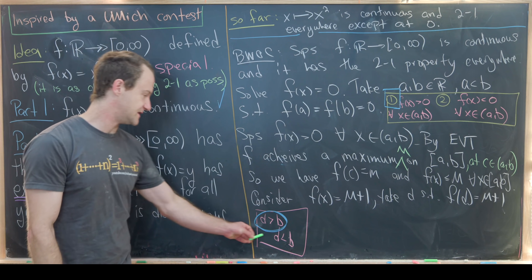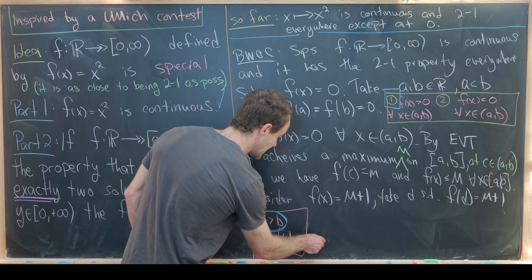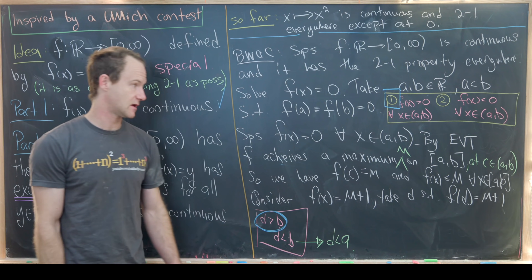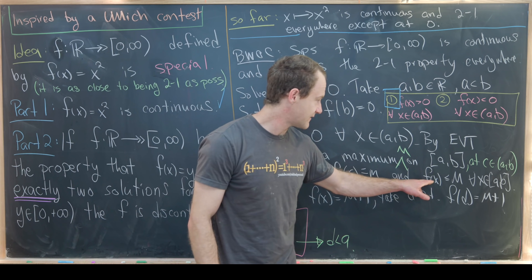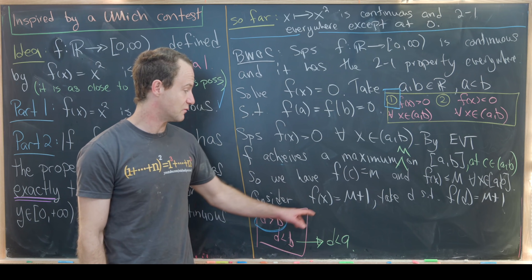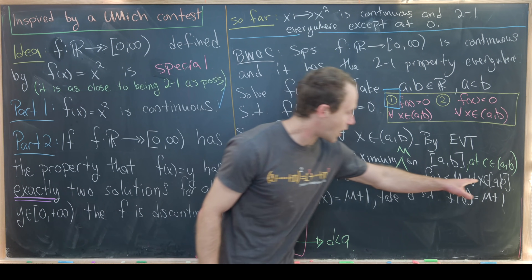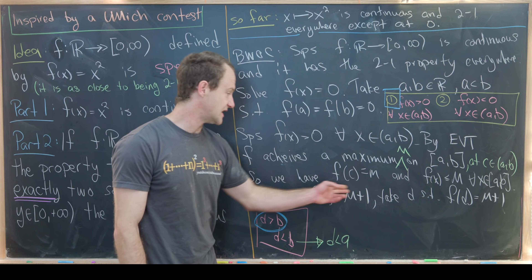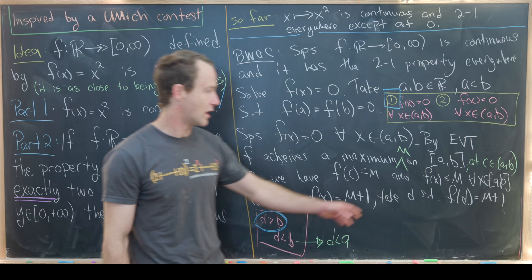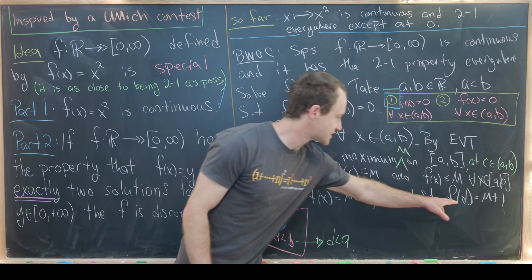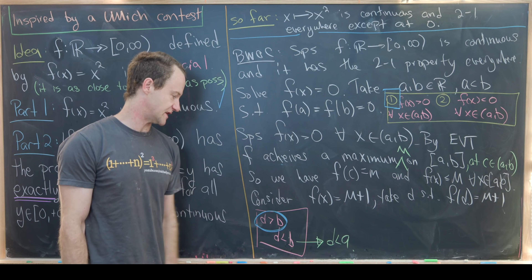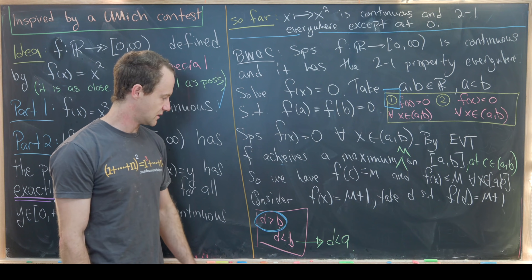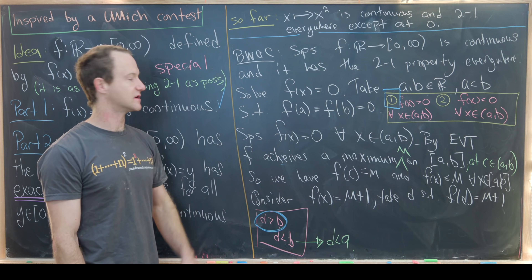We'll consider the case d > b, and note that if d < b, it must actually be less than a. The reason is that f(x) ≤ M < M + 1 on the entire interval [a, b], so it's impossible to achieve the value M + 1 on that interval. The solution must occur outside [a, b], either to the right or to the left.